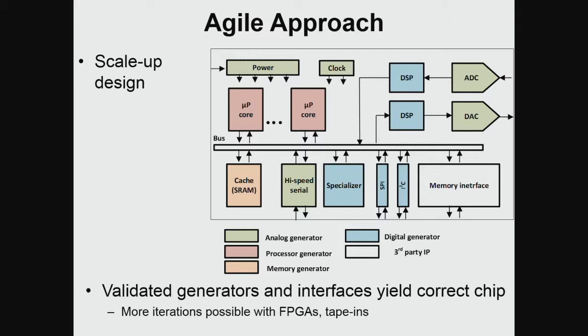When we do that, in the next version we should be able to scale up the design to the full-blown version. And if we don't want to build the whole system at once, our agile design flow allows monthly or bimonthly variations as internal tape-ins or FPGA prototypes. To do that, we need to build hardware generators — a different way of building things. Instead of building instances of a design, we build a generator that generates many instances.